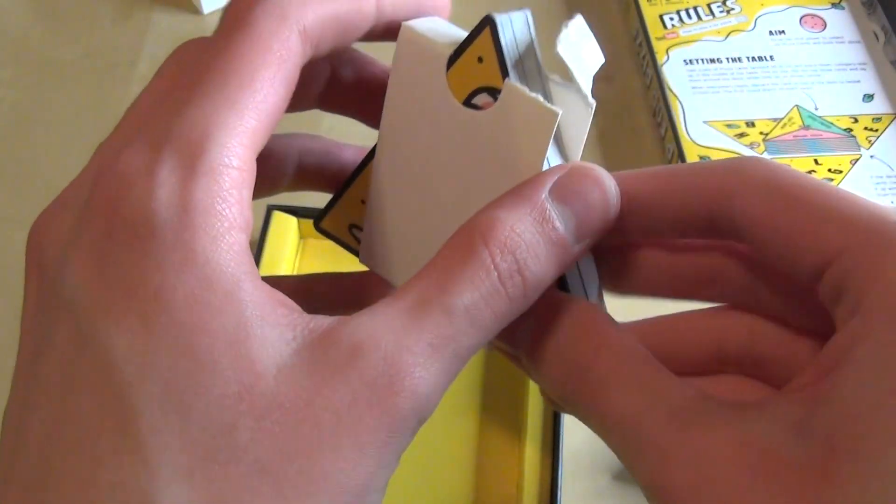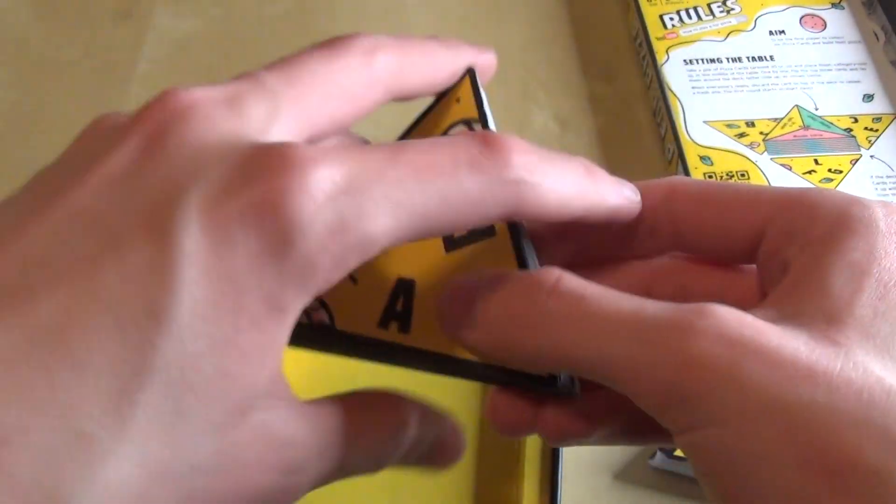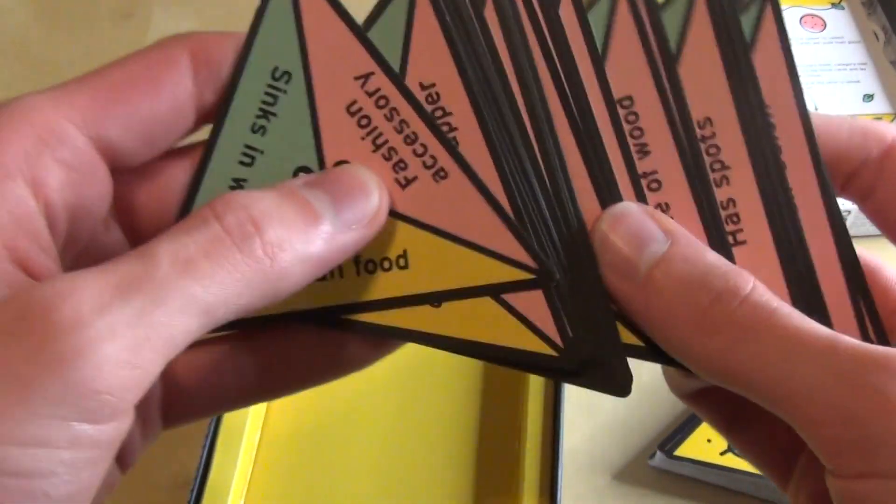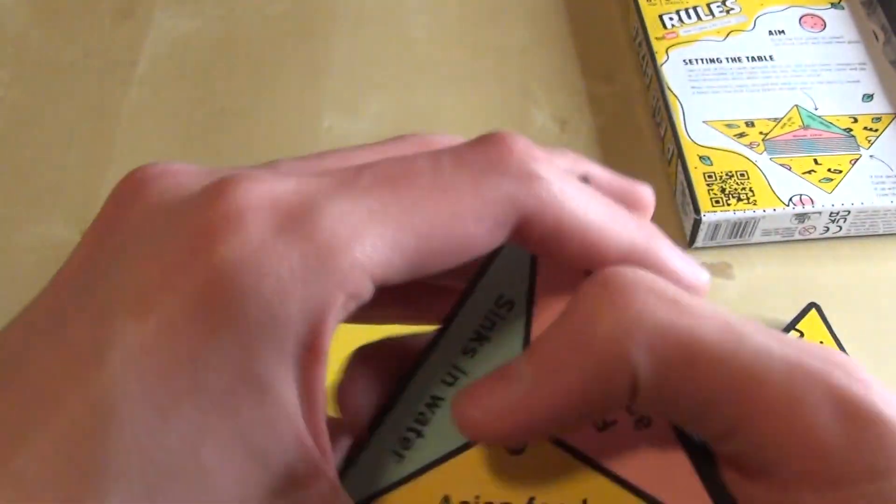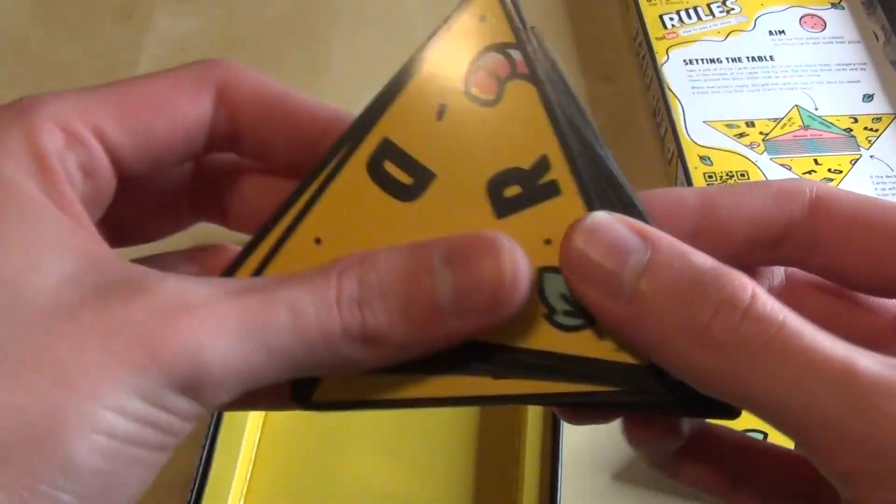So yeah, this works too, and then you just slide it back in. I don't think I'm going to keep those. Okay, so we've got some categories on this side and then we've got some letters on the other.